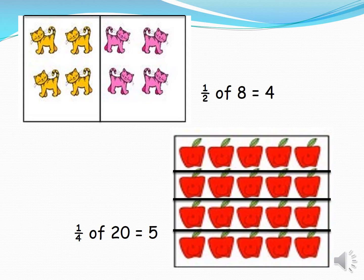We have eight animals in a group divided into two equal parts. So one half of eight is equal to four. Next figure we have here is the plants. We have 20 plants divided into four equal parts. So each part is one fourth. One fourth of 20 is equal to five.